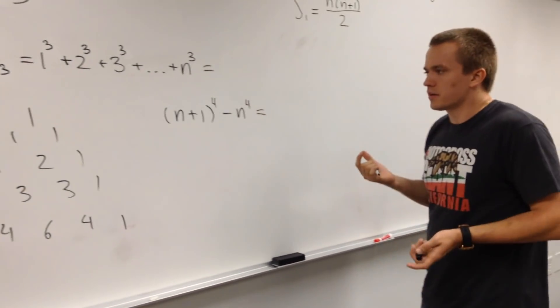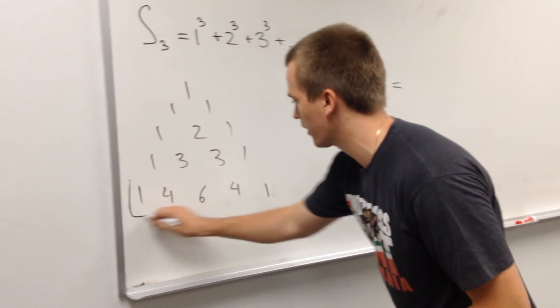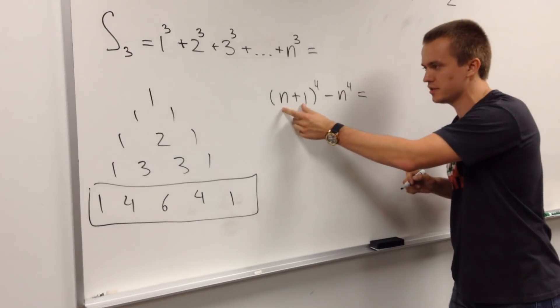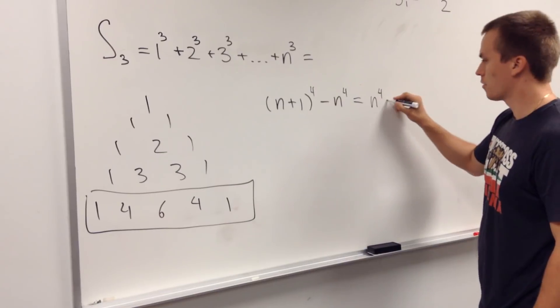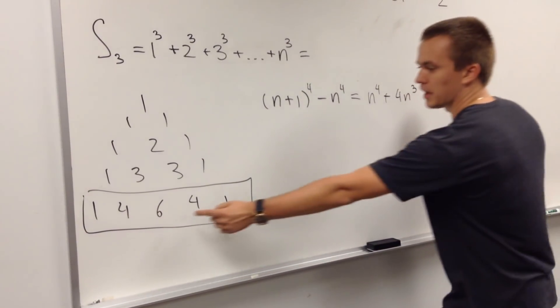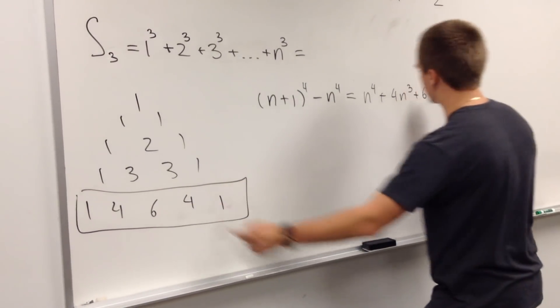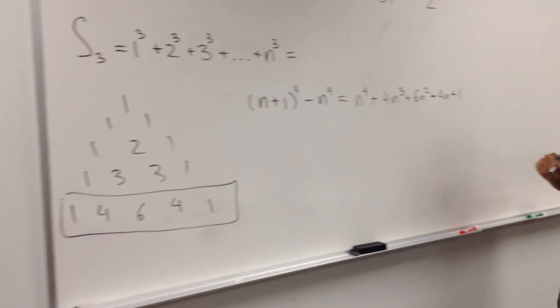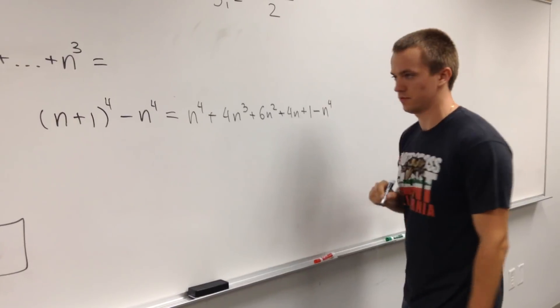And you might ask yourself, what is this equal to? And we can use like this triangle to get our coefficients. So this sum, this term is actually equal to n to the fourth plus 4n cube plus 6n square plus 4n plus 1. And the last term is minus n to the fourth.